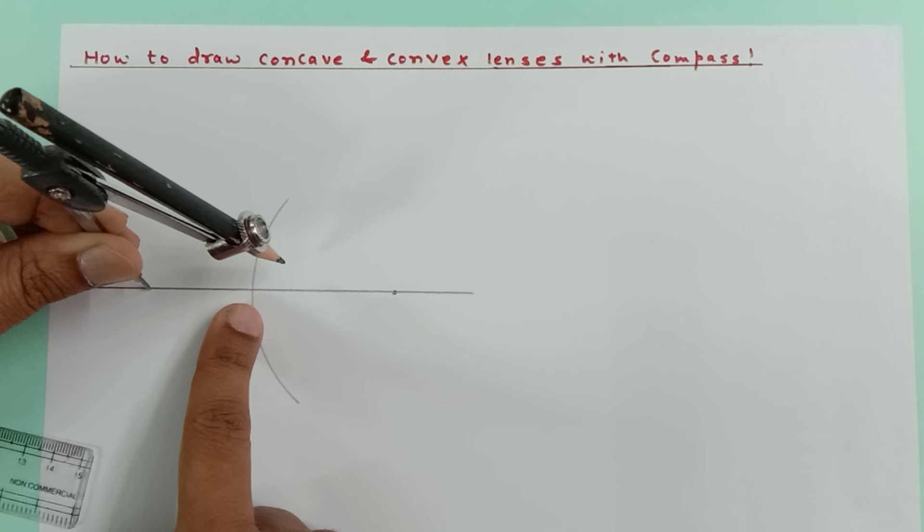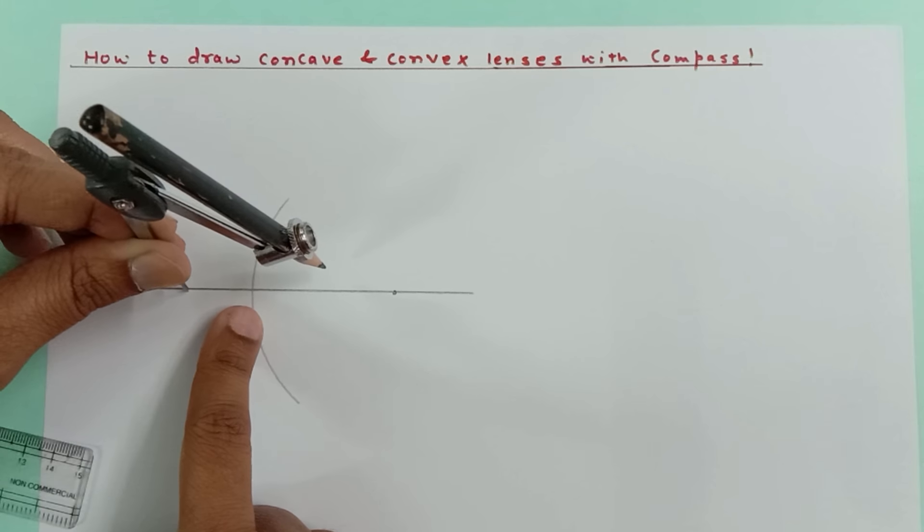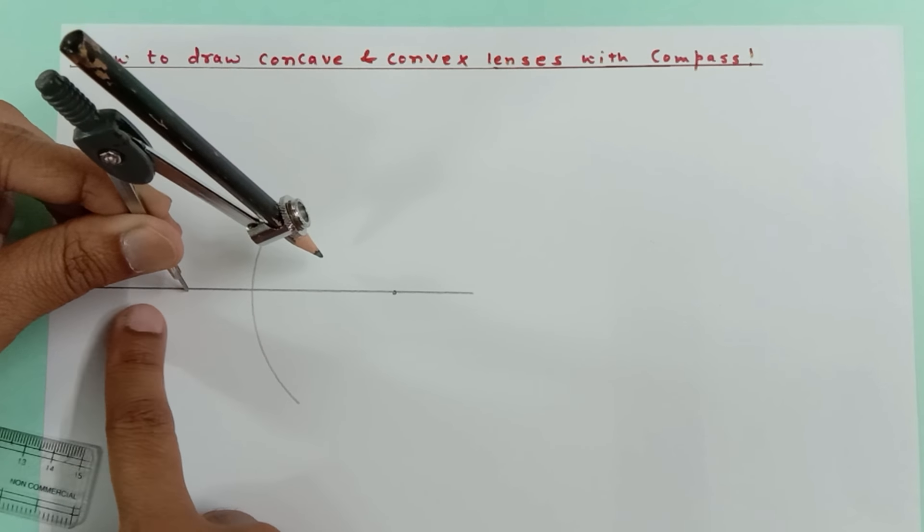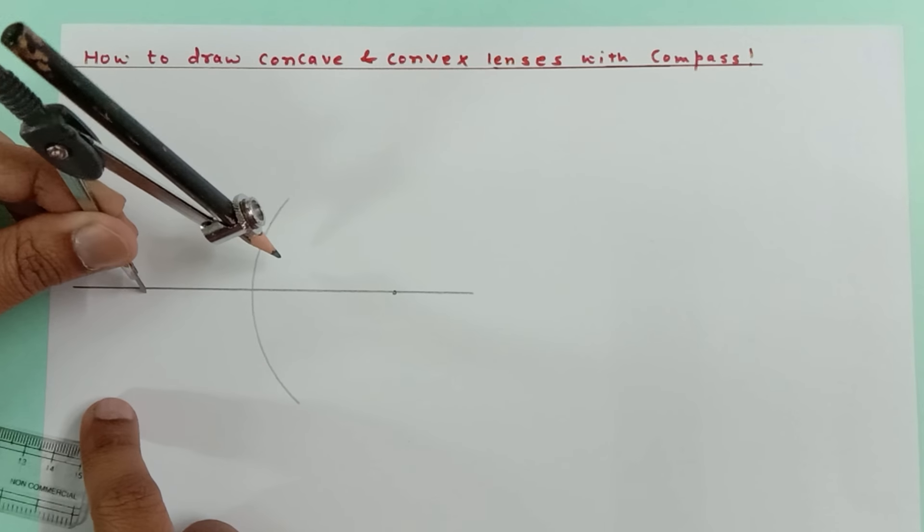Then this point should be very near to this curve like this one. But I want to make the lens thin, so I'm going to shift this edge of the rounder or compass on this side.